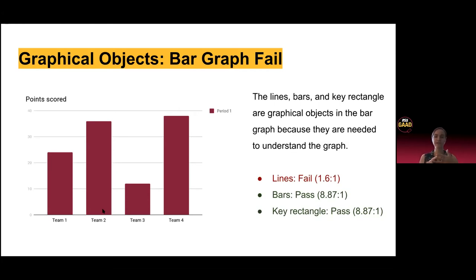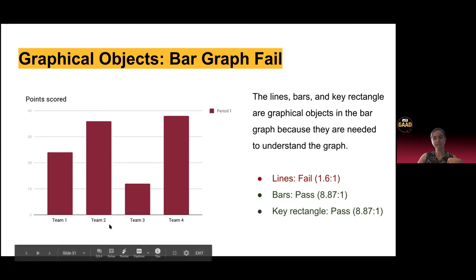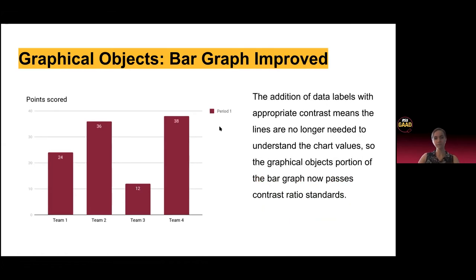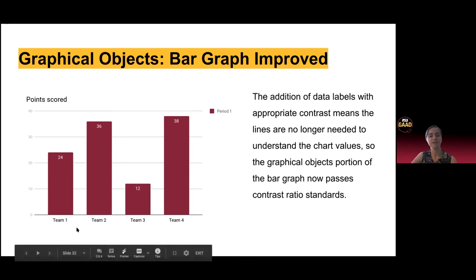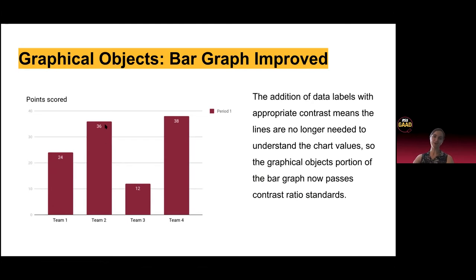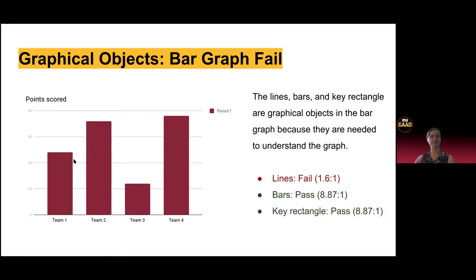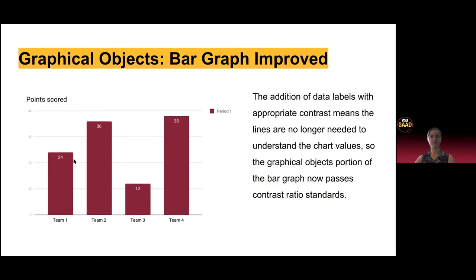There are three different graphical objects in the bar graph: the lines, the bars, and the key — and each one of those needs to meet that 3 to 1 standard. To improve this and make it pass, you could have numbers within the bar graph, which eliminates the need for these lines to communicate, since you're communicating the actual number within the bars. This is also a lot easier to read — for example, team one scored 24 points and team two scored 36 — rather than trying to align and guess the value.